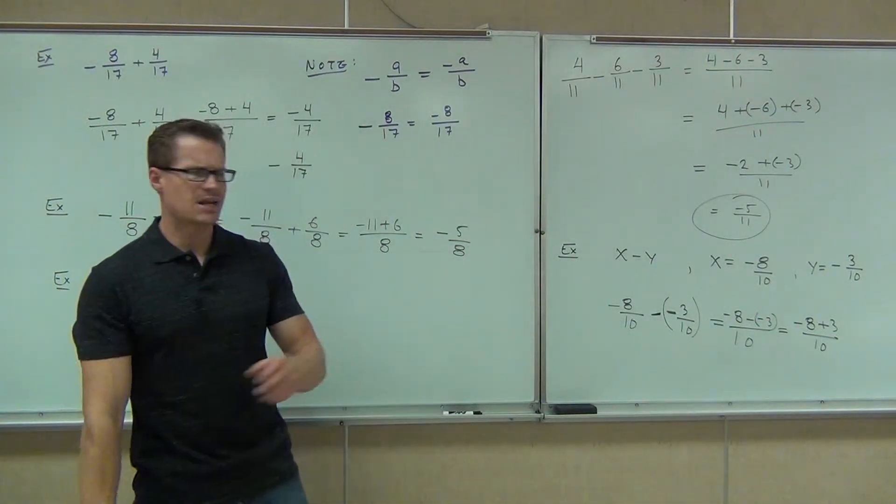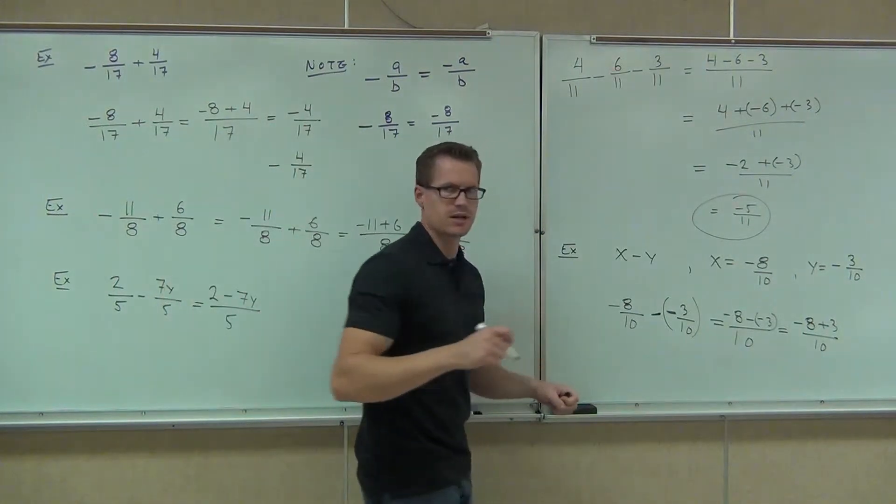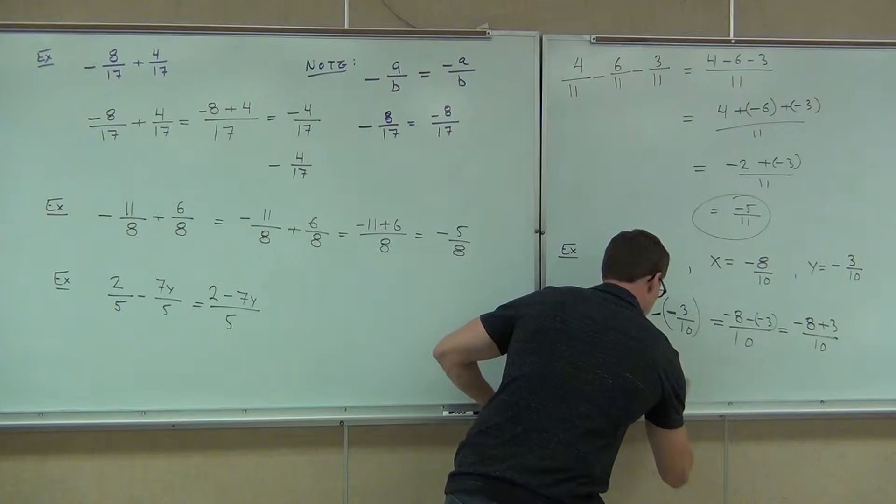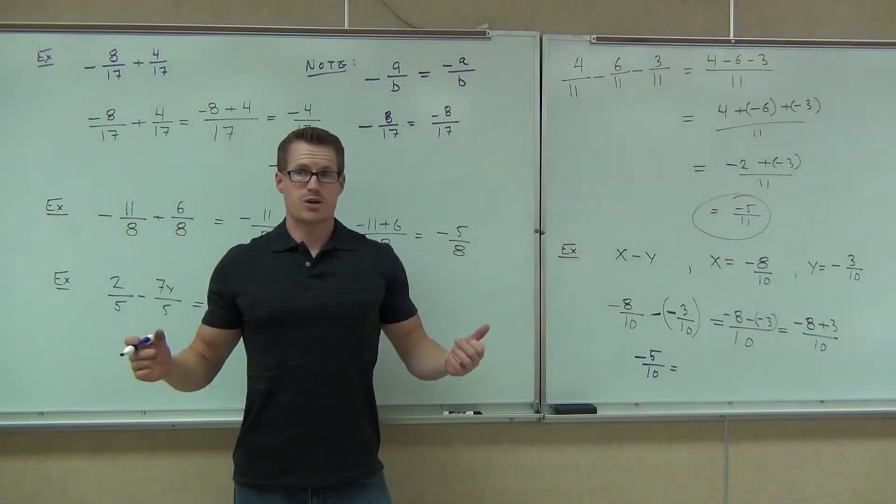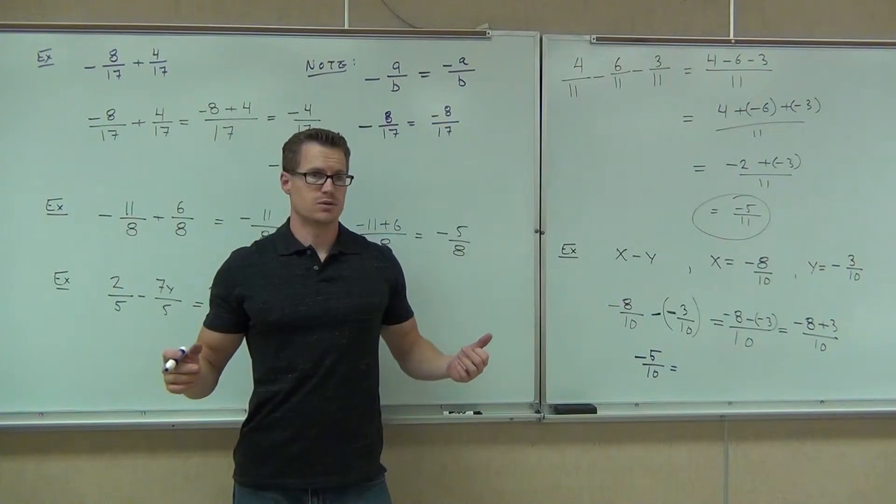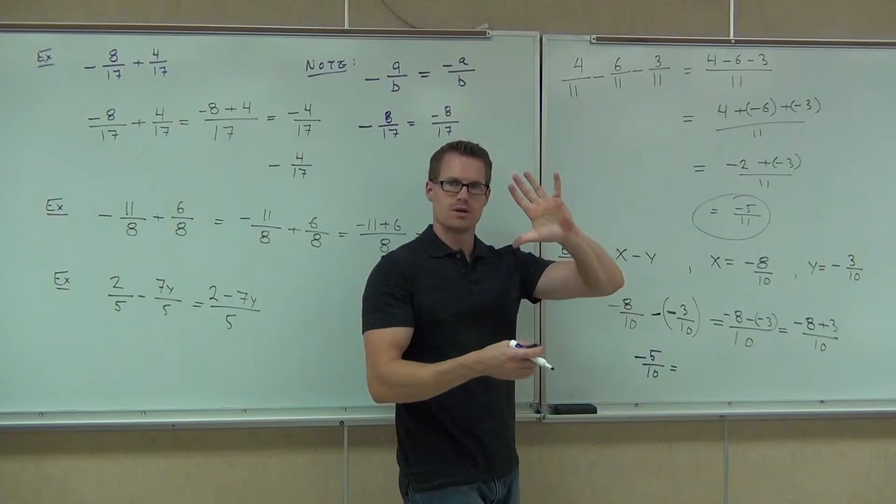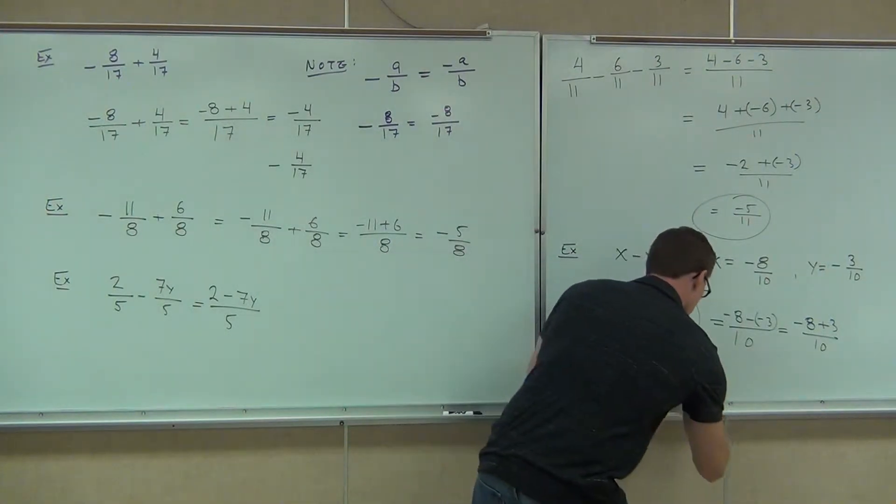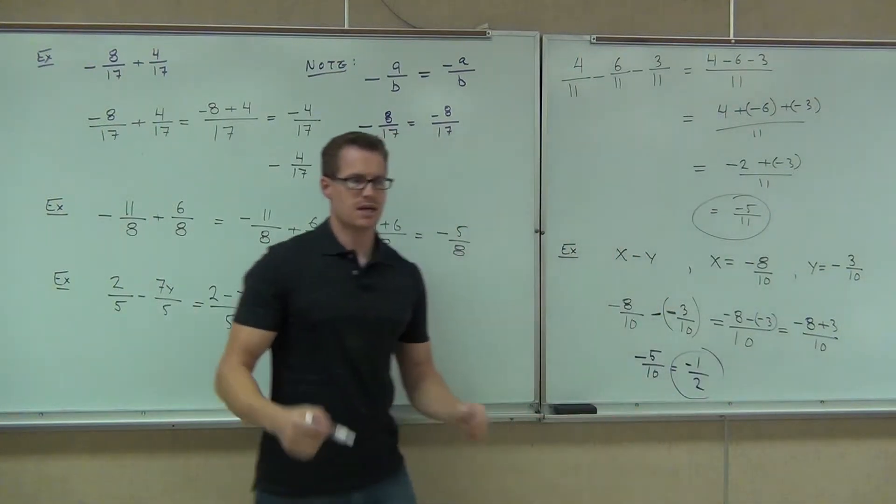And lastly, what's negative 8 plus 3? Negative 5. Negative 5 tenths. Do you simplify it? We have negative 5 tenths. We better know how to simplify that. What's that equal to? One half. Yeah, we divide both the top and the bottom by 5. We get negative 5 divided by 5 is negative 1. 10 divided by 5 is 2. That's as simple as we can make it. You get negative one half.